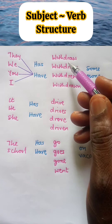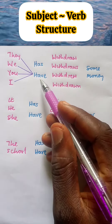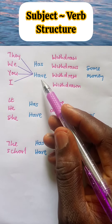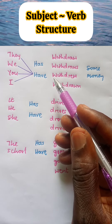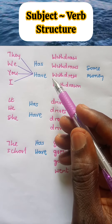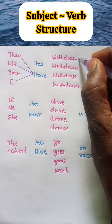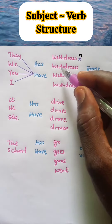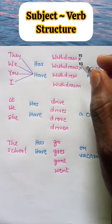Now, coming here, we have a list of lexical verbs. Have and has are anomalous verbs. After an anomalous verb, the next lexical verb must be verb three — that is, past participle. So let's look at it. Have withdraw? No, this is wrong — withdraw is verb one. Have withdrawals? Wrong — withdrawals is verb five.